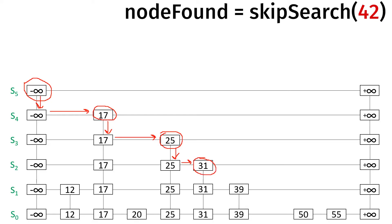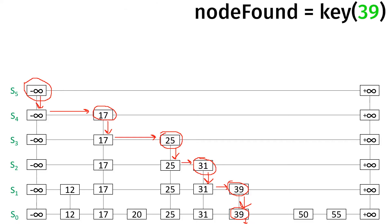31 is less than or equal to 42; positive infinity is not, so we drop down again. We can go over to 39 because it's less than or equal to 42; positive infinity is not, so we drop down again. 50 is not less than or equal to 42, so we stay at this tower. We try to go down again but we can't because the below reference is null — so we're done. We return the node containing 39 as the key.